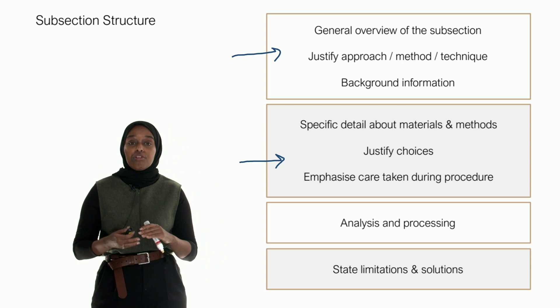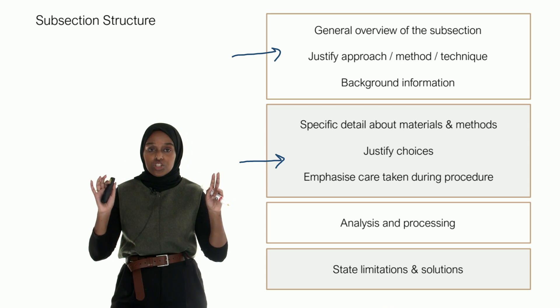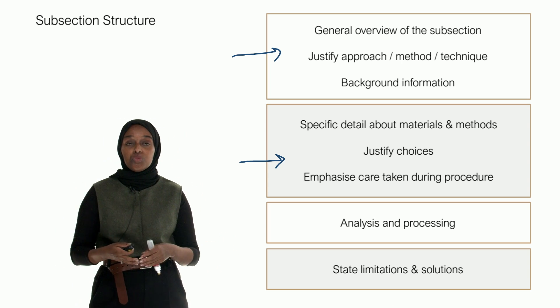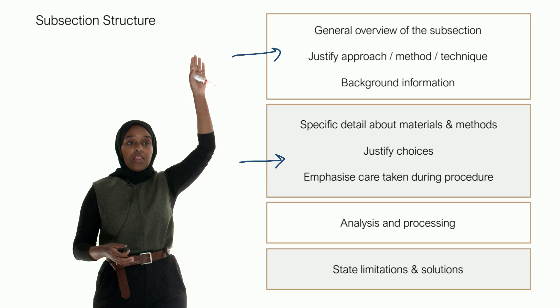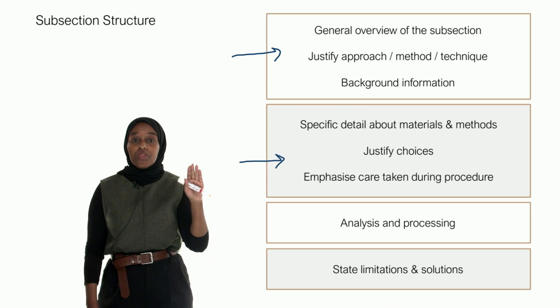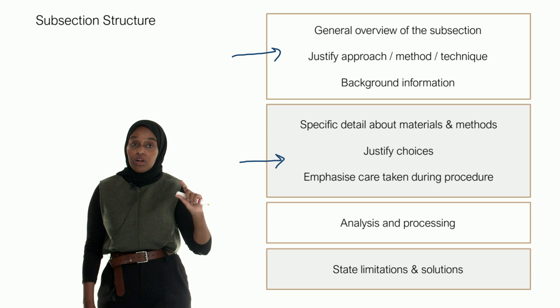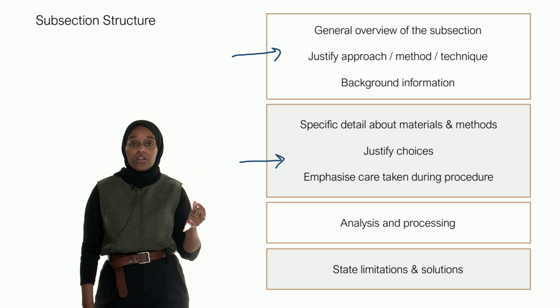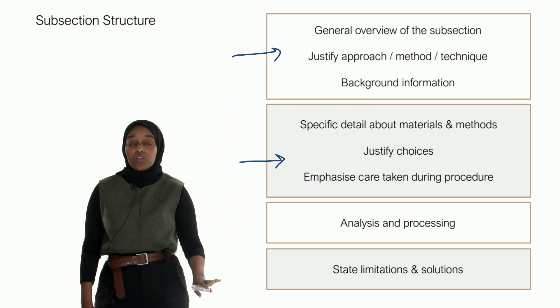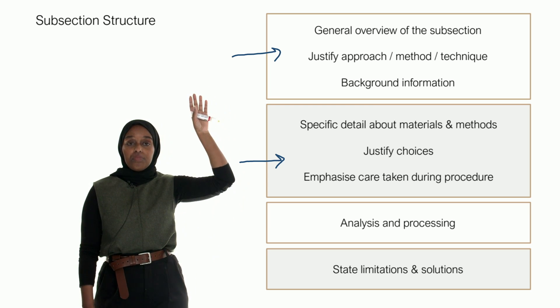Then lastly, your limitations and your solutions. No experiment comes without limitations—every experiment has issues and you have to overcome them. Here in this section you want to give detail. This is the order for every subsection. Any method you describe, no matter how large, how small, or how irrelevant it might appear, you want to justify everything that you've done using this layout.